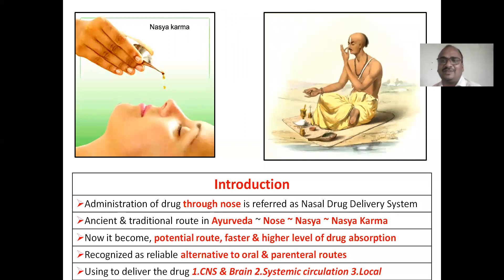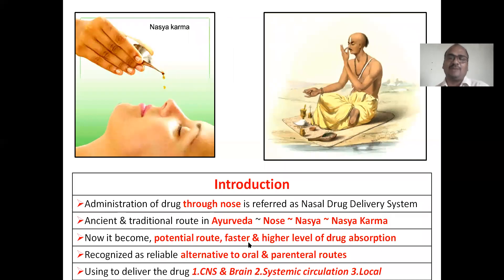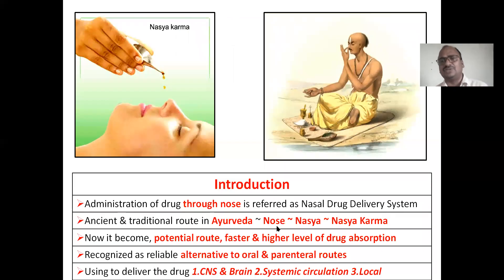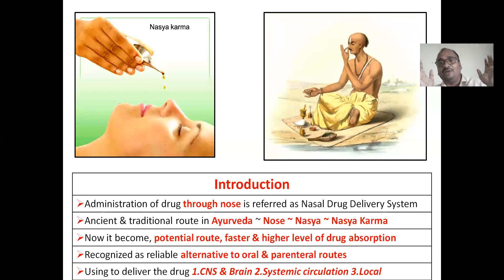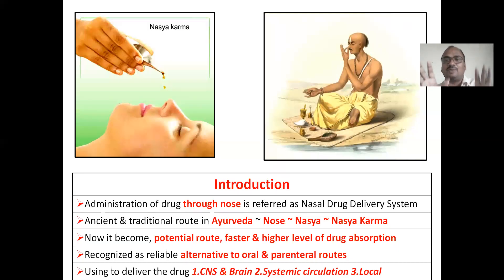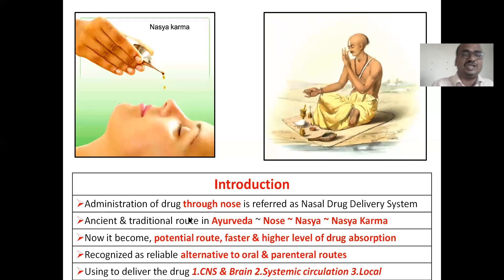I am just joking about the pharmaceutics fellows, but actually this is an Ayurvedic system. In Ayurvedic system, we call it Nasya karma. Ask any Ayurvedic doctor — your BHMS or BAMS friends — it is an ancient and traditional route. They use Nasya karma and call it a very powerful route. Don't think the nose is small and the stomach is bigger. The nose is also a very powerful route — directly, the drug will enter into the brain.